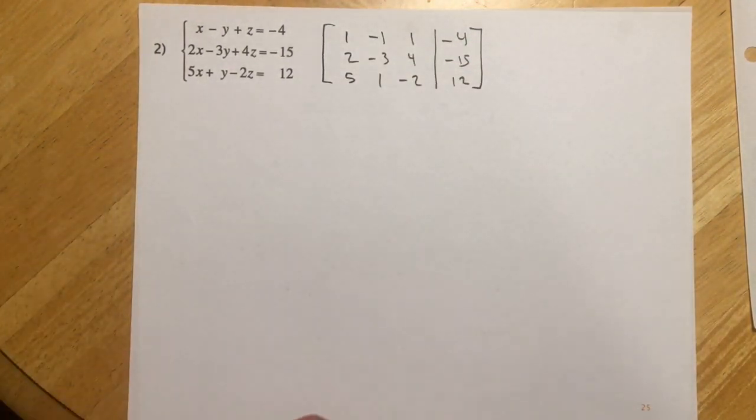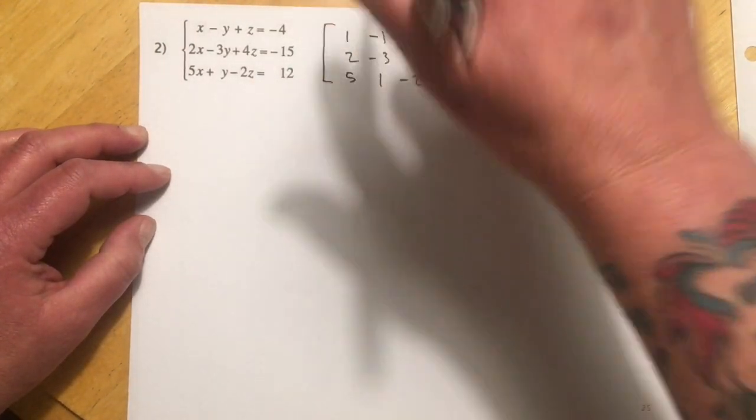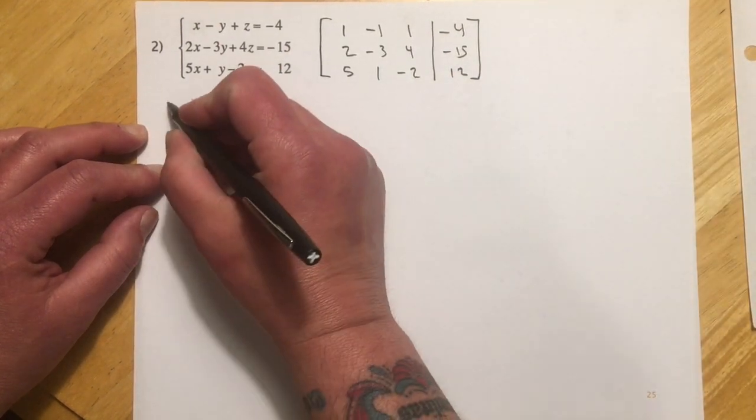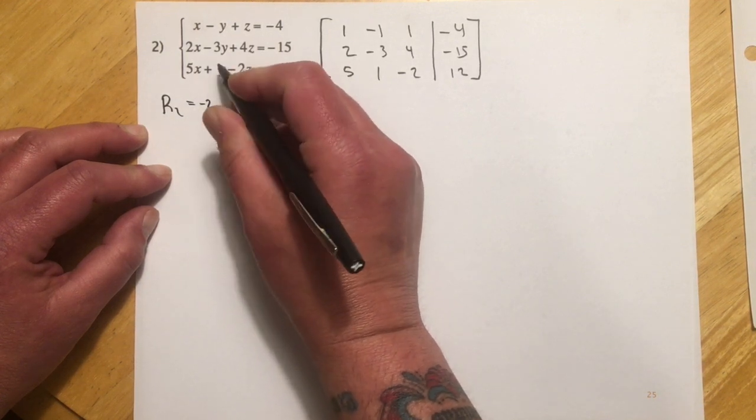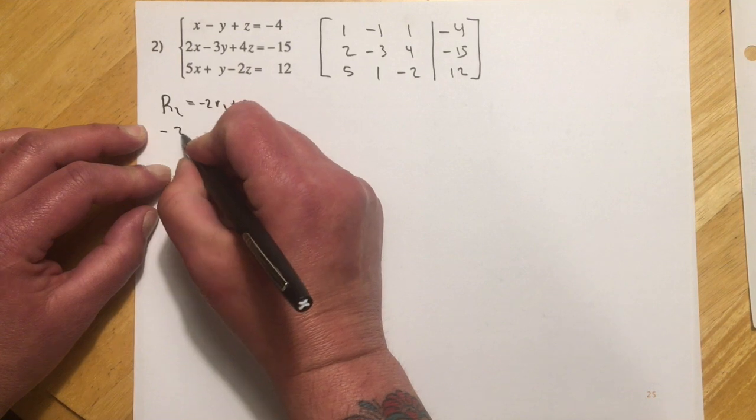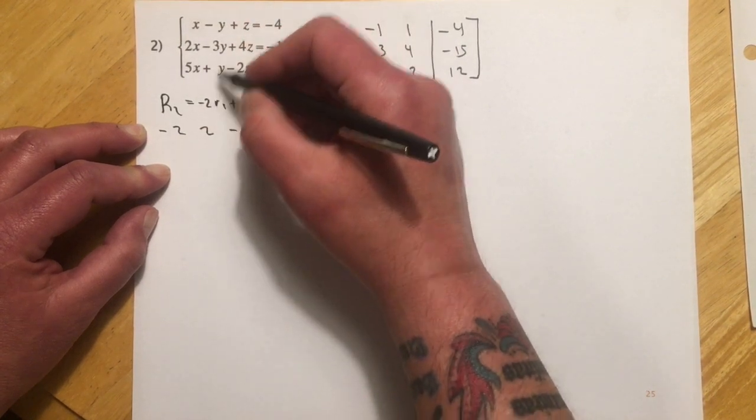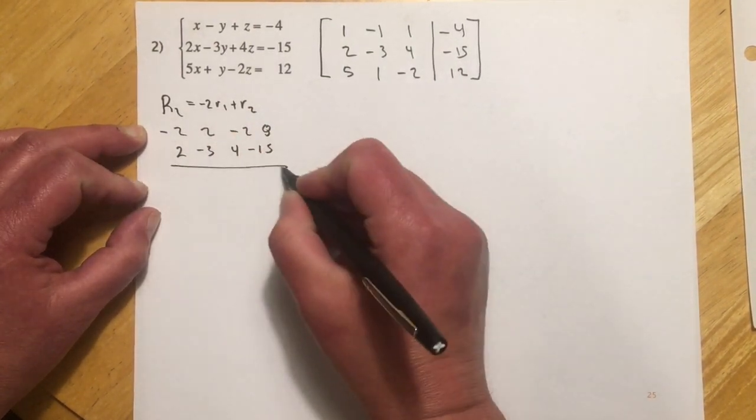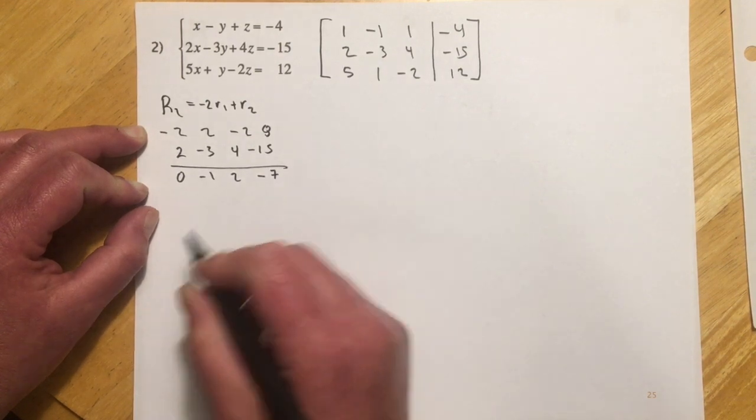Okay, so in the second example, we don't have quite so many zeros, so we'll have to do a little bit more work. So I already have the 1 up here. And again, if these had been written in a different order, my first thing would be to swap the equations so I had a 1 up in this corner. And I'm going to use this 1 to knock out the 2 and the 5. So I'm going to do a new row 2. I'm going to go negative 2 times the existing row 1 and add to that row 2. So that's going to look like negative 2, 2, negative 2, and 8. So negative 2, positive 2, negative 2, and 8. And I'll just copy down this row. And add those, so then I get my 0, negative 1, 2, and that would be negative 7.